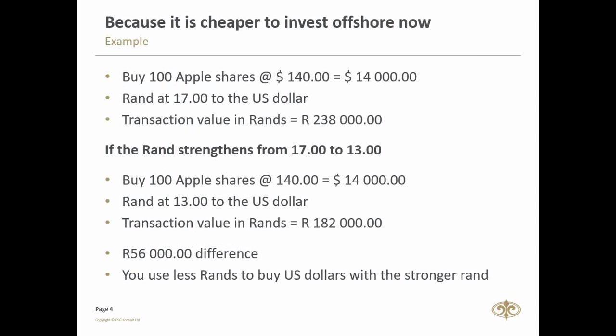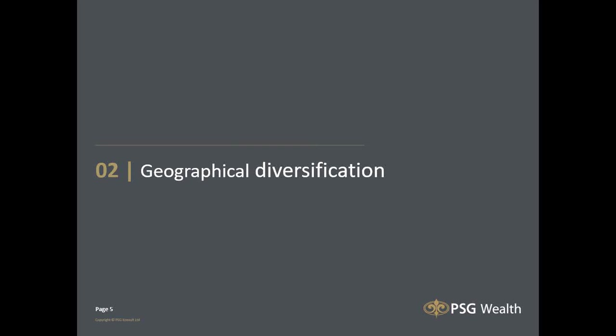The very same transaction with the rand at 13 to the dollar would cost 182,000 rand — a 56,000 rand difference. So you use fewer rands to buy US dollars with a stronger rand. This brings me to the first point we'll discuss: geographical diversification.